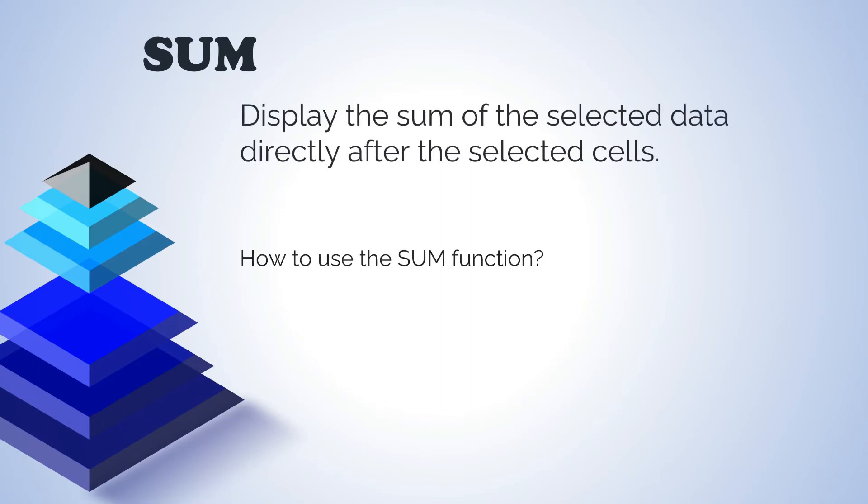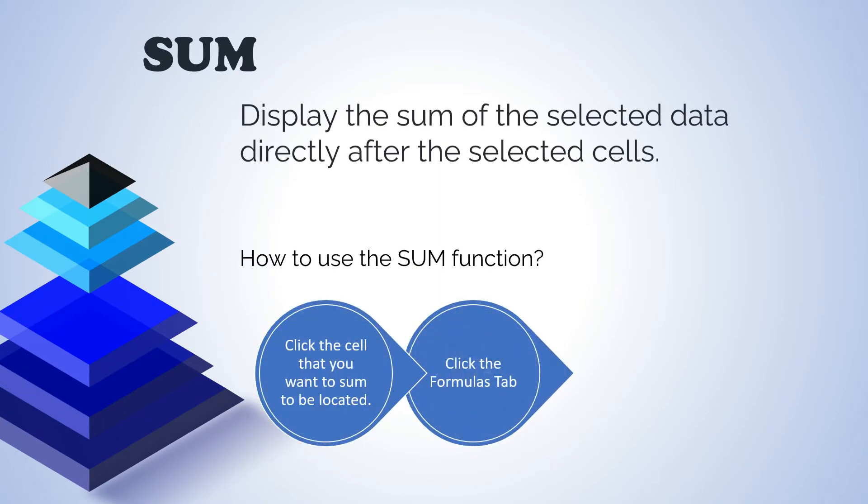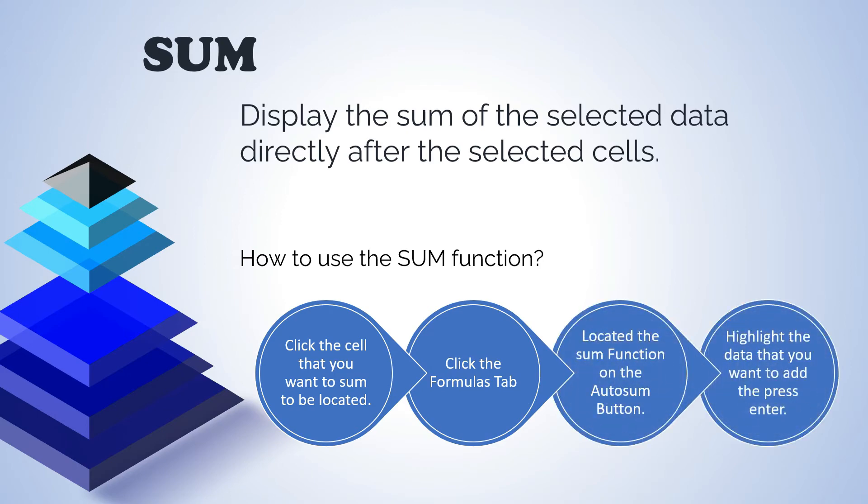Sum. Display the sum of the selected data directly after the selected cells. These are the steps on how to use the sum function. First, click the cell that you want to sum to be located. Second, click the formulas tab. Third, locate the sum function on the auto sum button. Last is, highlight the data that you want to add, then press enter.